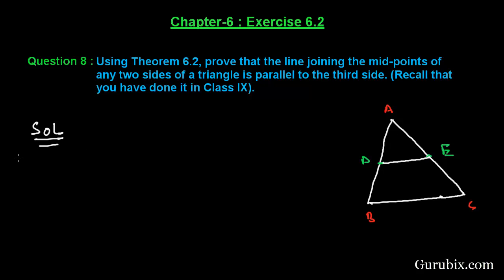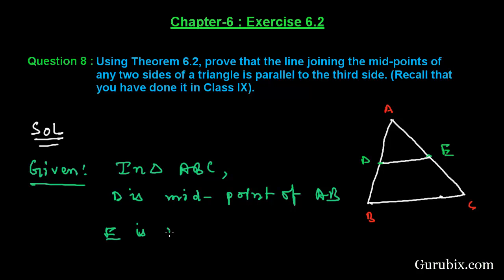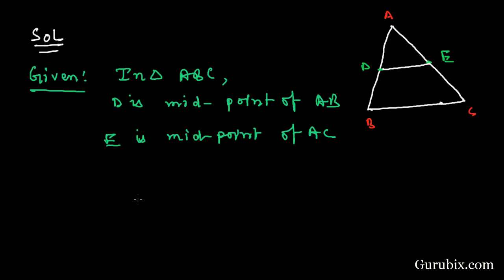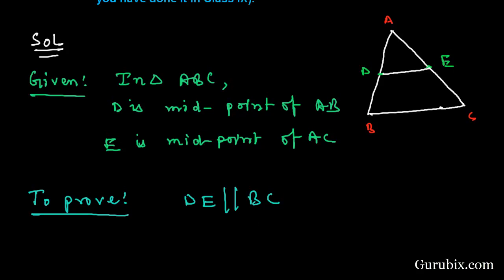First of all, what is given to us? We shall collect it. We are given in triangle ABC, D is midpoint of AB and E is midpoint of AC. So this is what is given to us. And what we have to prove? We have to prove DE is parallel to BC.